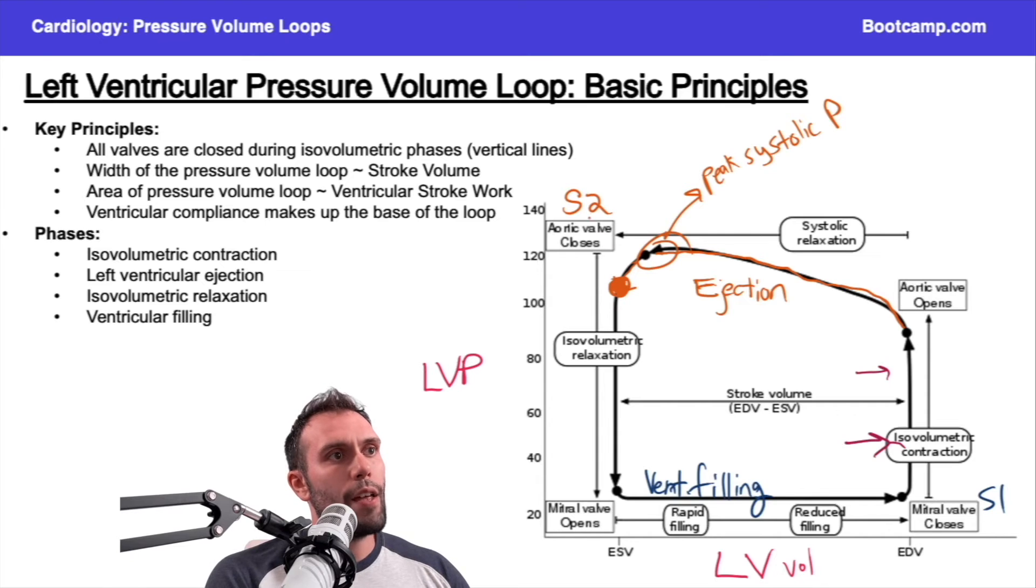After that valve closes, now all the valves are closed, so we enter another isovolumetric phase. Here's another isovolumetric phase. In other words, the volume's not changing. That's why we have a straight vertical line. We just have a change in pressure.